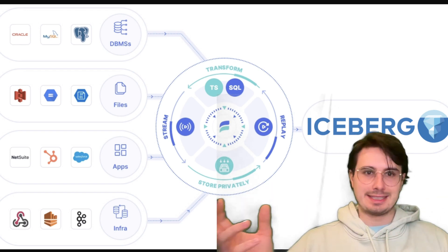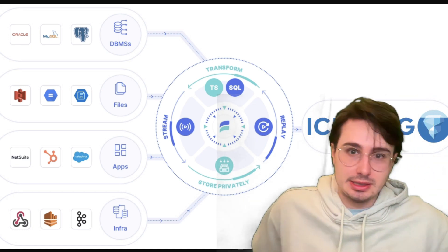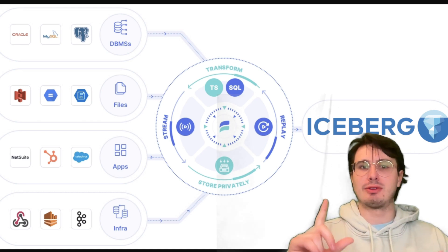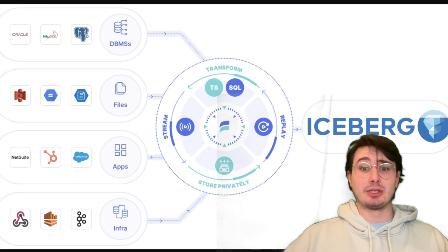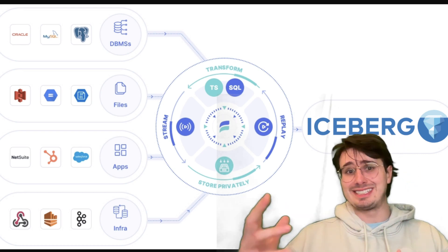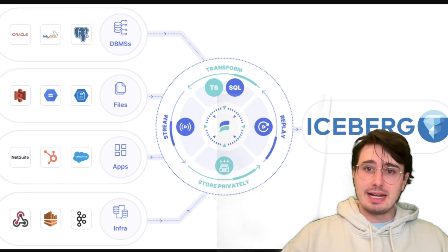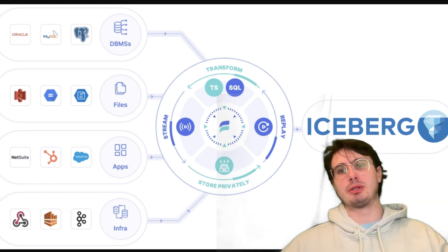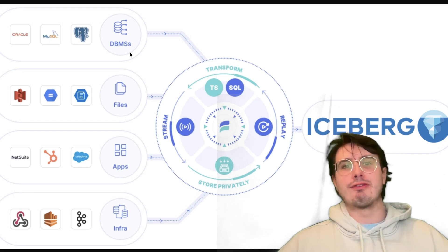To provide some context, Iceberg has emerged as probably the top open table format for data lakes because it has a ton of features — schema evolution, time travel, ACID transactions, hidden partitioning — all built in. It was actually built by Netflix and then handed off to the Apache Foundation, and it addresses a lot of the limitations of older data lake formats like Hive, while giving you really solid foundations for building scalable, reliable, and interoperable data lakes across many different query engines.